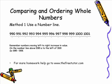Now typically, as numbers move from left to right on a number line, they increase in value. In other words, the number furthest to the left on the number line is smallest in value, and the number furthest to the right is greatest in value. So remember, numbers moving from left to right increase in value. On the number line above we see that 995 is to the left of 998, so we can conclude that 995 is less than 998.